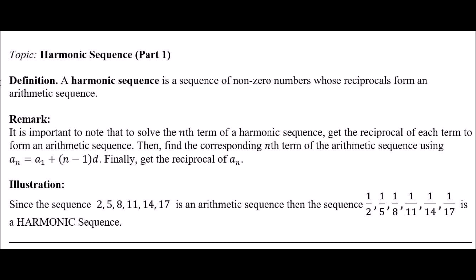Remark: it is important to note that to solve the nth term of a harmonic sequence, we need to get the reciprocal of each term to form an arithmetic sequence. Then, find the corresponding nth term of the arithmetic sequence using a_n equals a_1 plus the quantity of n minus 1 times d. Finally, get the reciprocal of a_n.